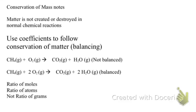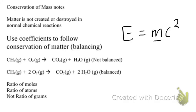Today we're going to talk about the law of conservation of mass, or conservation of matter. The law states that matter is not created or destroyed in normal chemical reactions. There are some abnormal reactions we'll get into in nuclear chemistry — Einstein's famous E=mc² equation — where some matter gets transformed into energy. But we're only going to deal with normal chemical reactions.